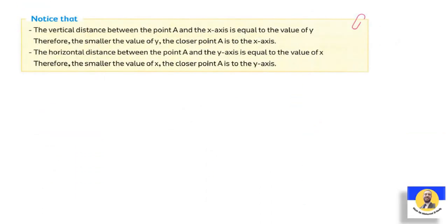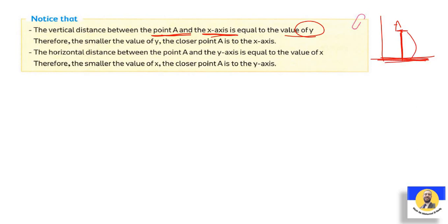Note: the vertical distance between a point and the x-axis equals the value of y. So the smaller the value of y, the closer the point is to the x-axis. The horizontal distance from a point to the y-axis gives the value of x — the first number in the ordered pair. The smaller that number, the closer the point is to the y-axis.